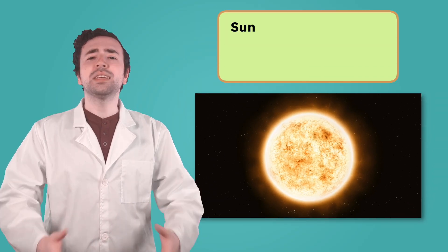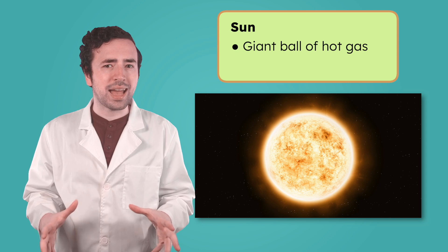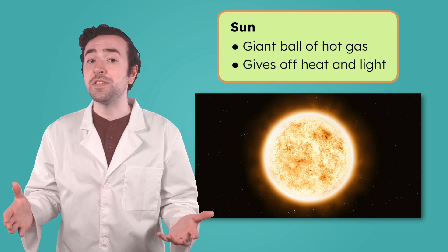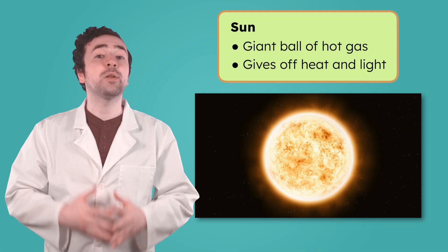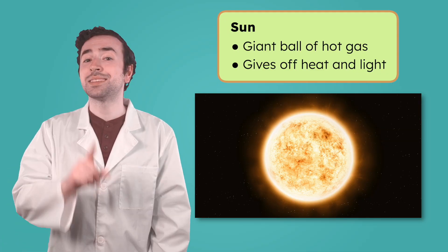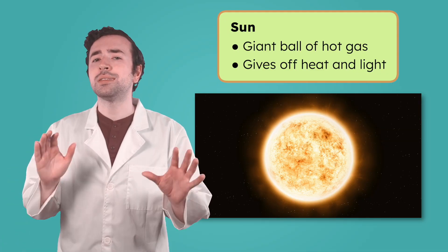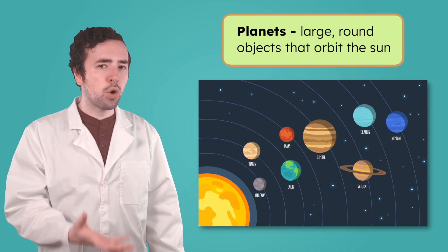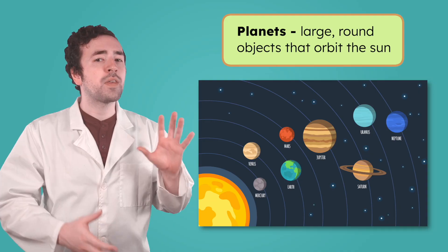Since the solar system is named after the sun, it sounds pretty important to me. The sun is a giant ball of hot gas at the center of our solar system. It gives off the heat we feel here on Earth and the light we see during the day. And it's the main source of energy for the entire solar system. Around the sun, we've got the planets. Planets are large, round objects that orbit the sun.